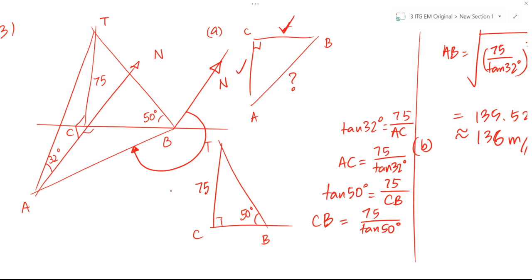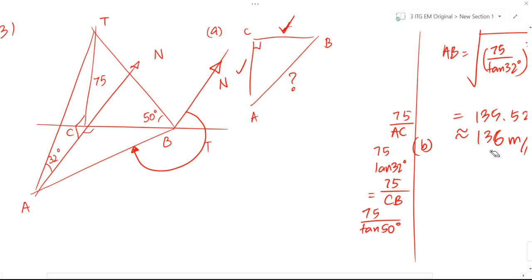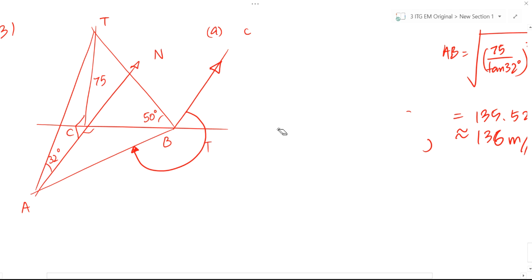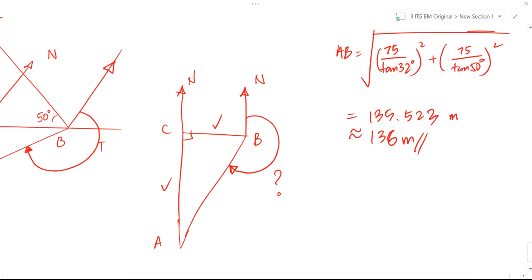So, I cannot see it very clearly. I am going to now convert this to a 2D diagram. Only the relevant parts. The building is not important to me anymore. Okay, so I have got my triangle. A, C, B. This is the north arrow. And likewise, this is the north direction. I want to find this angle. Okay? And we already found A, C, and B, C in part A.